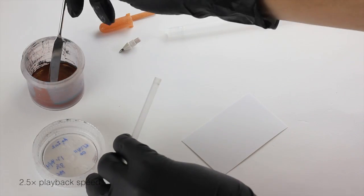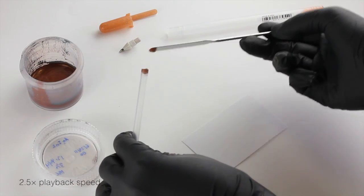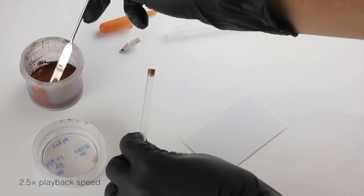After dismantling a commercial rollerball pen and washing out the original ink, we can fill the reservoir with our custom silver ink using a flat-tipped spatula.